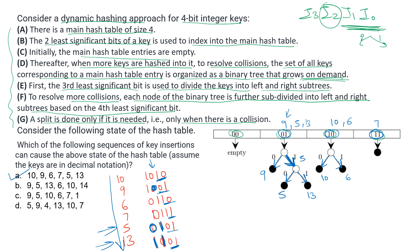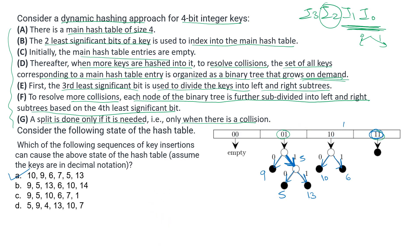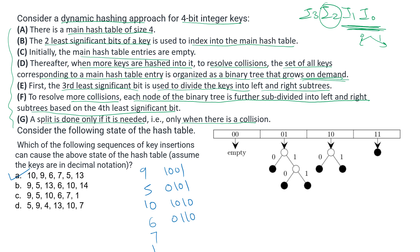Since this was an MCQ, finding one correct option is sufficient, but for understanding let us check option C. Option C has the sequence: 9, 5, 10, 6, 7, 1. Their binary representations are: 9=1001, 5=0101, 10=1010, 6=0110, 7=0111, 1=0001. Starting with 9 at index 01, then 5 causes a collision at 01. Checking i2: 9 has 0 and 5 has 1, so the tree grows with zero side as 9 and one side as 5.